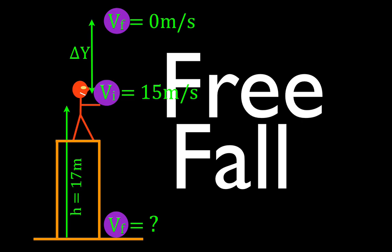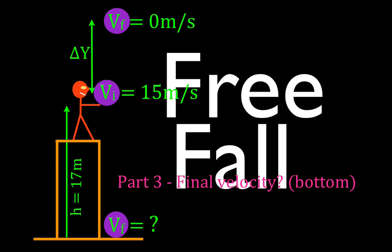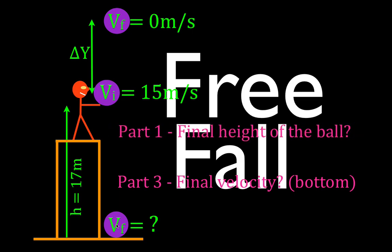In today's video we're going to go over another problem involving free fall kinematics. This is part three, the final part of a three-part series. In this video we're going to find the final velocity when this object, which is projected straight up, comes straight back down — the final velocity at the bottom. In part one we found the change in height and the final height of the ball. In part two we found the total time the ball was in the air.